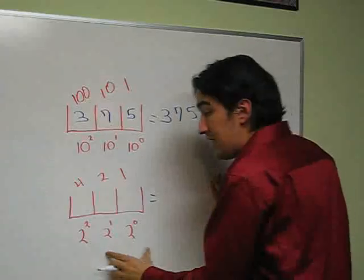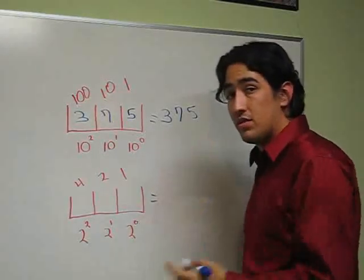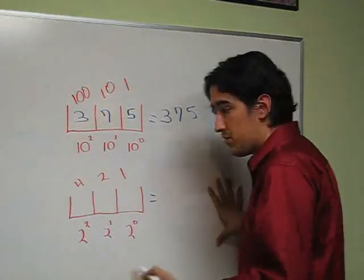In the binary system, each place is worth a different power of 2. This is because we only have two numbers to deal with, so each place is worth twice as much as the previous one.